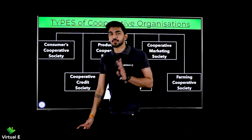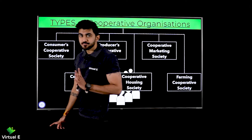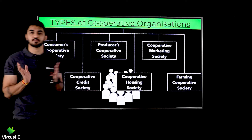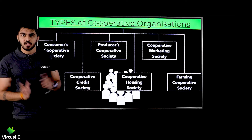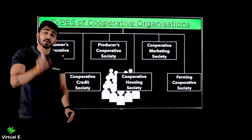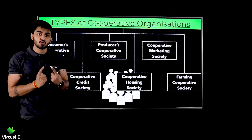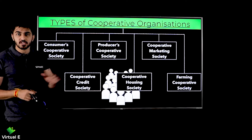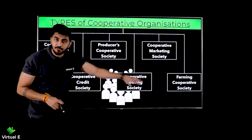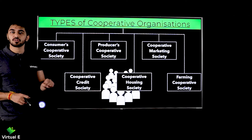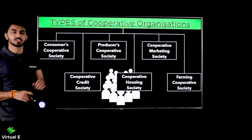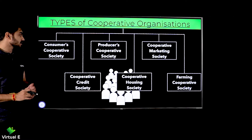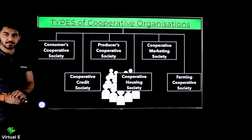What does a cooperative society mean? When a lot of people from the low income group come together, they pool their money for one particular purpose. Everyone's motive is the same — they are all consumers, all producers, all farmers, all need a house, or all need a loan. With that same motive, let's start with consumer cooperative society.